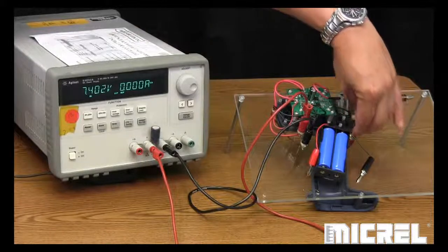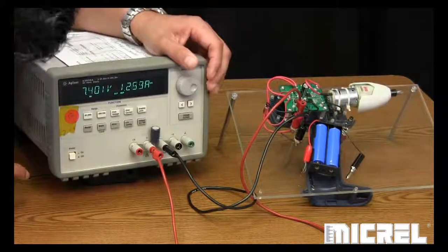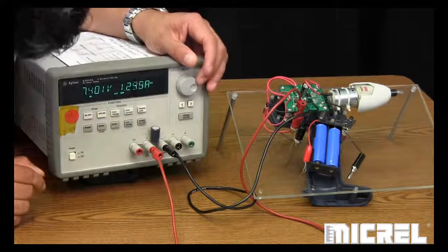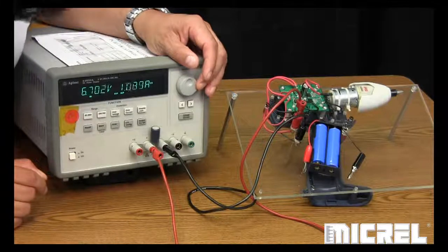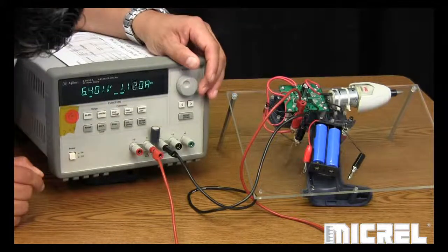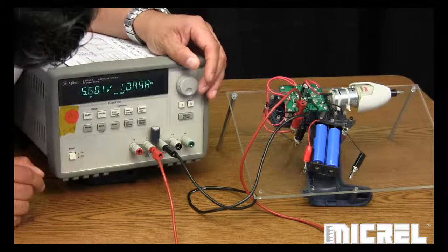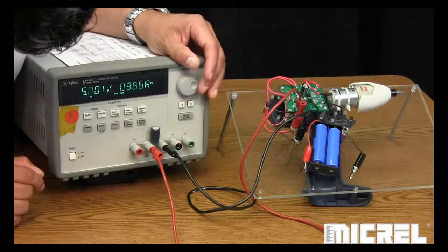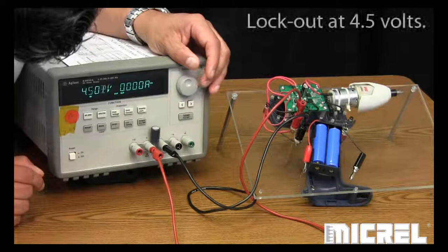So as you can see, I have 7.4 volts just like the battery. Now, let's just say you've been driving and working on the field and the battery is decaying. 6.8, 6.6, 6.5, 6 volts, 5.6, 5.4, 5.2 until we get to the under voltage lockout.